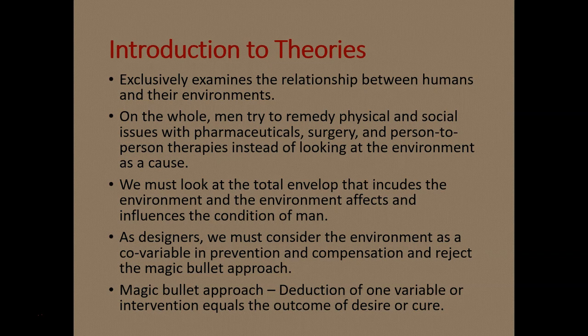We must look at the total envelope that could cause any of these problems and then eliminate those things. As designers, we must consider the environment as a co-variable in prevention and compensation and reject the magic bullet approach. The magic bullet approach is used by most other researchers — you look at one variable, and if it doesn't work, you say that's not the cause. You can't do that with environmental research. You've got to look at lighting, air conditioning, fenestration — every single thing in that environment.